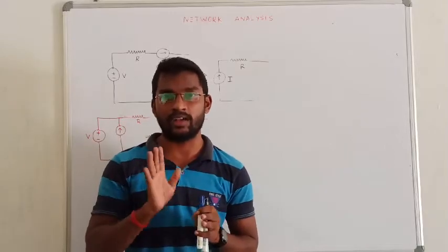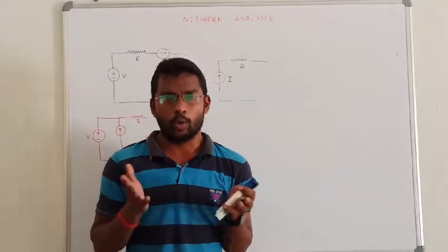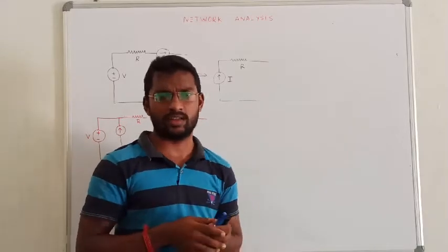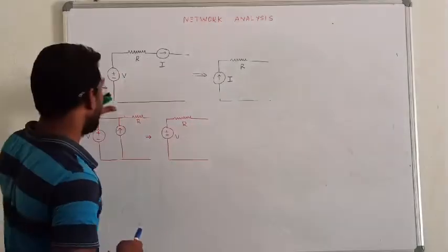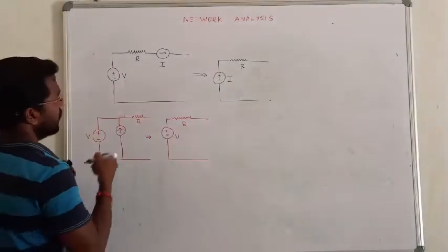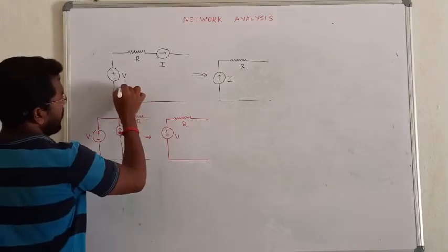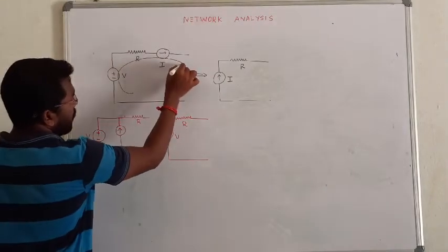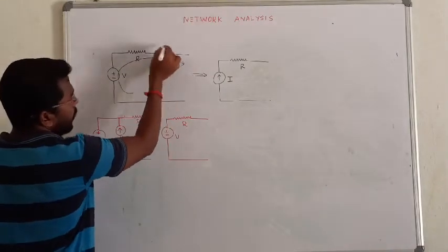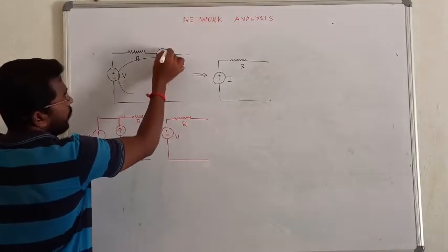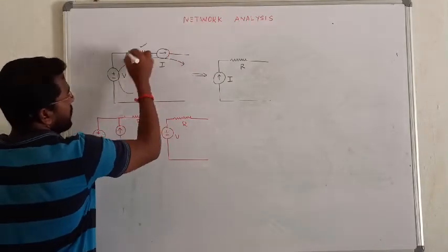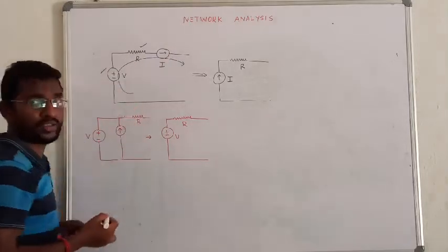In a parallel circuit, which value changes? The voltage value changes. In the first case, here I took a series circuit — what is the current source, resistance, and voltage source? Clear?